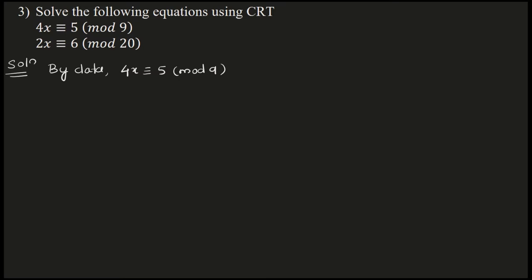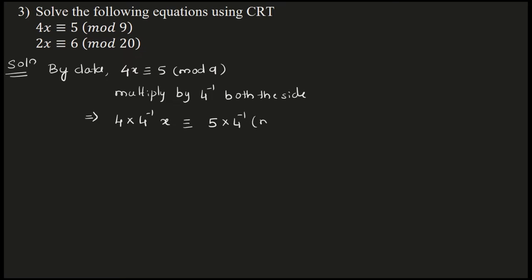You have to multiply both sides by 4-inverse to get the standard form. So, multiplying by 4-inverse on both sides, this becomes 4 times 4-inverse times x congruent to 5 times 4-inverse mod 9. As you know, 4 times 4-inverse is 1, so the LHS becomes x congruent to 5 times 4-inverse mod 9. Now our aim is to find 4-inverse.